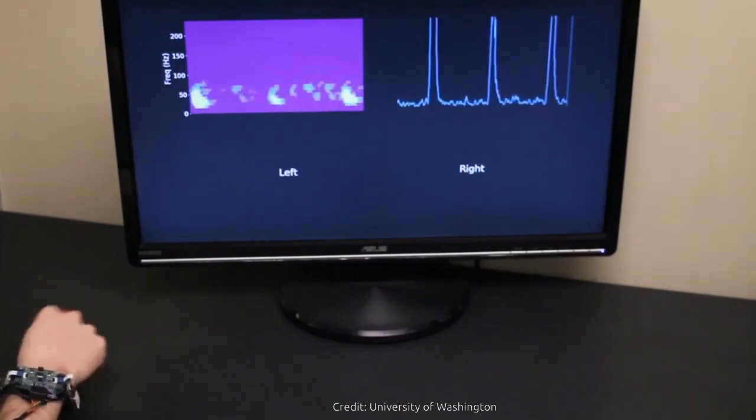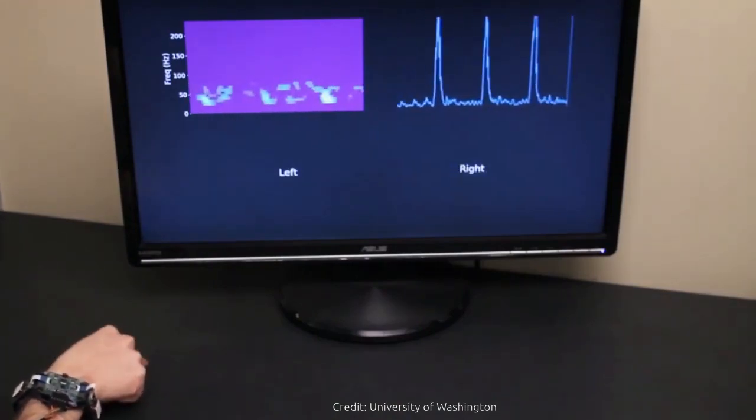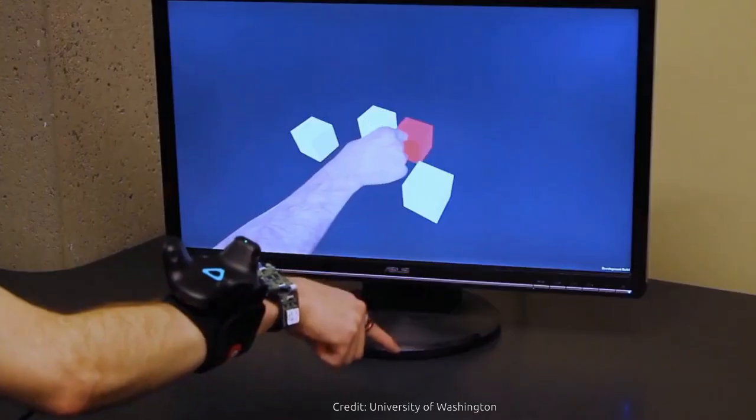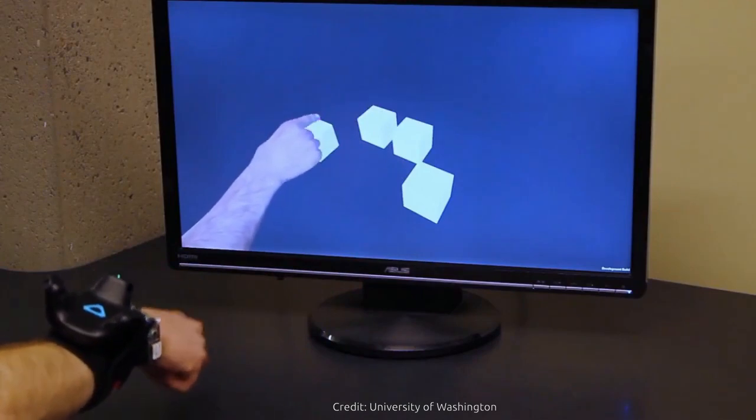In addition, because Arrow Ring uses magnetic fields, it can still track hands even when they're out of sight, such as when a user is on a crowded bus and can't reach their phone.